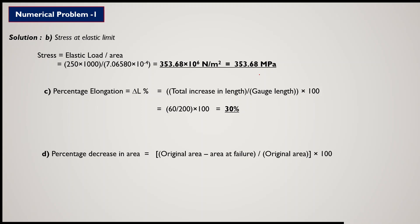The fourth point is percentage decrease in area. From the statement, the area decreased before failure — we have to calculate how much. The formula is: (original area − area at failure) / original area × 100. Applying π d² / 4 with original diameter 3 cm and final diameter 2.25 cm, the percentage decrease in area comes out to be 43.75%.